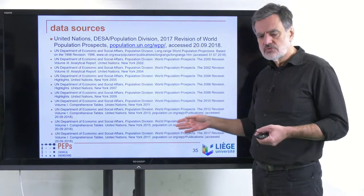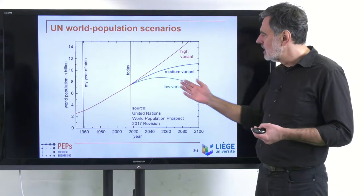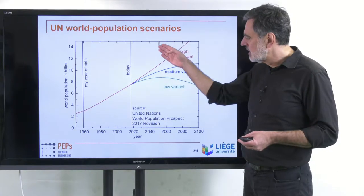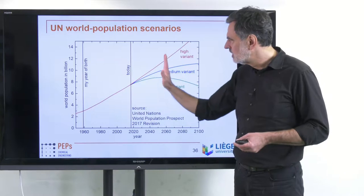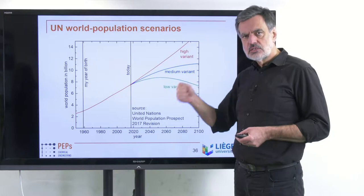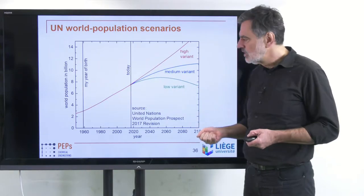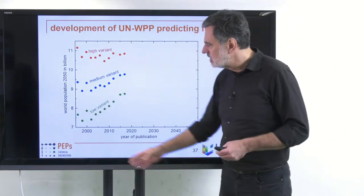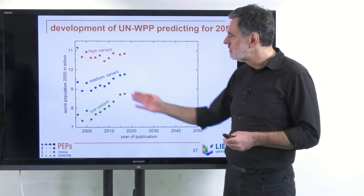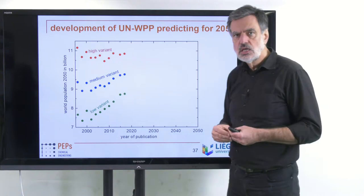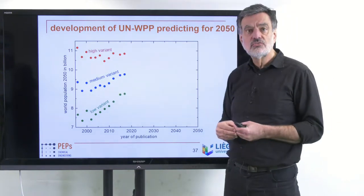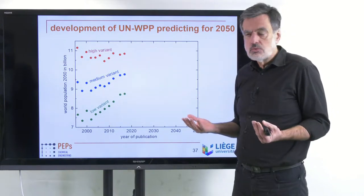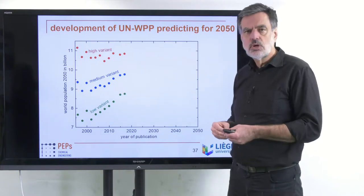I have been noticing that these data have been shifting over the past from publication to publication. What I want to show is: I focus on the values projected for 2050, take only those values, and plot them associated with the date when they were published — between 1996 and 2017. We see for the medium and the low variant a systematic trend: they have always been shifted a little bit in the upward direction, giving a significant upward slope.